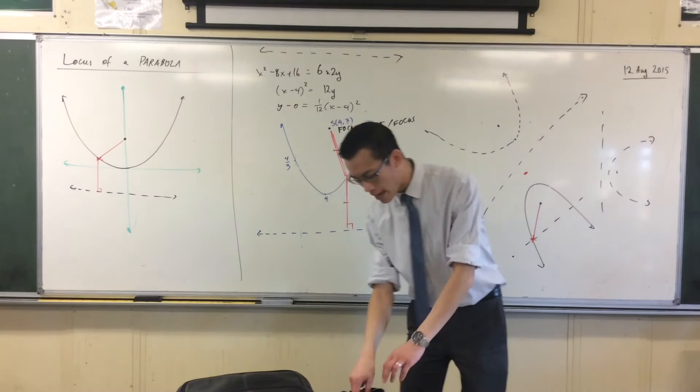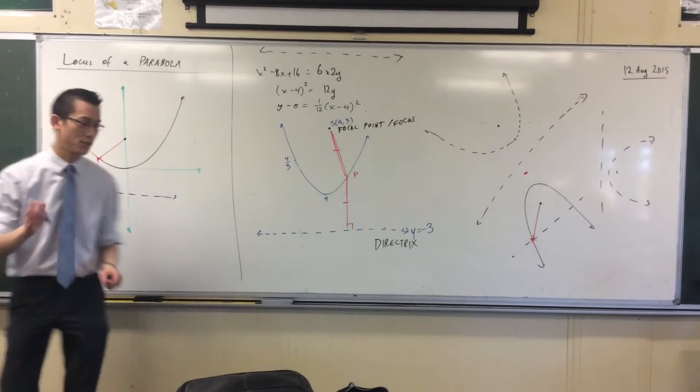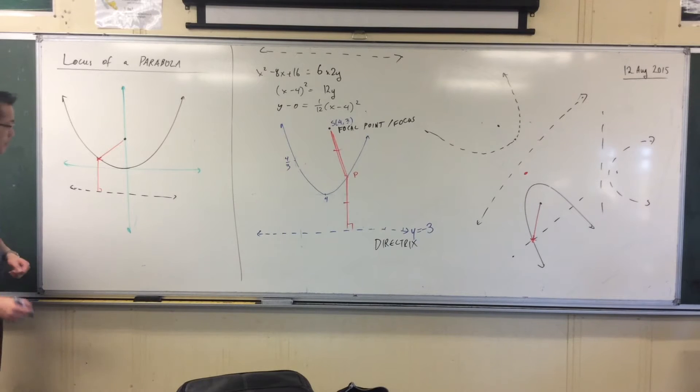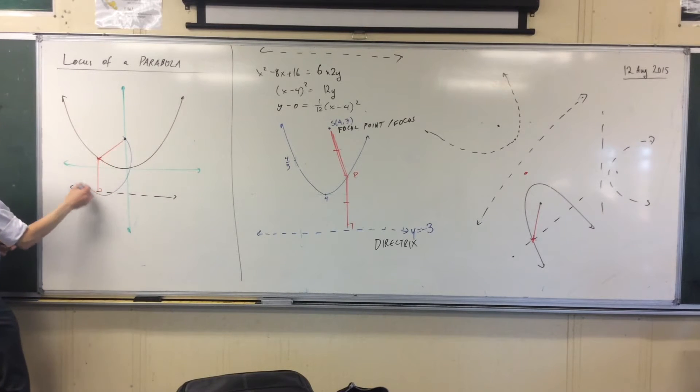Now what that should mean is, I ought to be able to construct, okay, think back to our previous topic. I ought to be able to construct a circle with its center at P, right, and the circumference should pass through, let's see how I go. There we go, use your imagination.